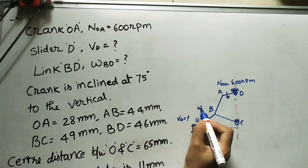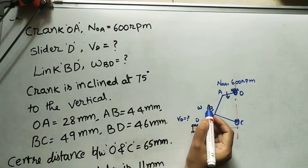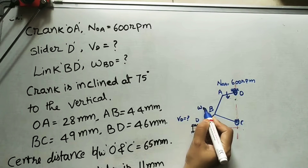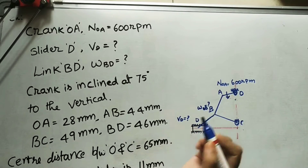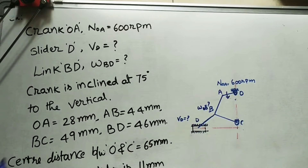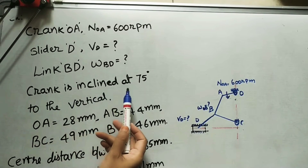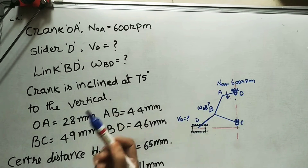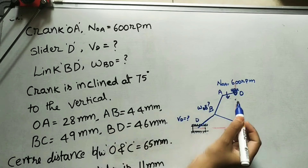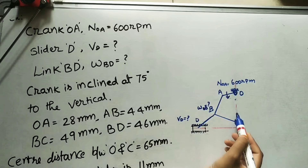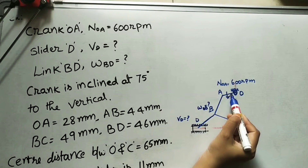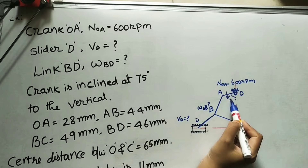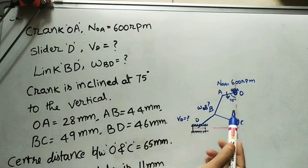As we know, angular velocity means omega, small w. We need to find this BD value also. The other given data is: the crank is inclined at 75 degrees with the vertical. So this is the vertical, and this crank is making 75 degrees. This angle is necessary for doing this diagram.